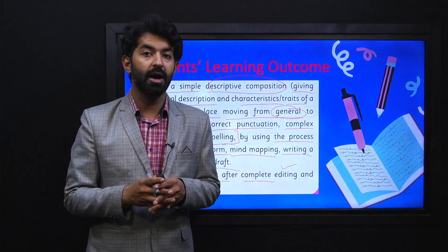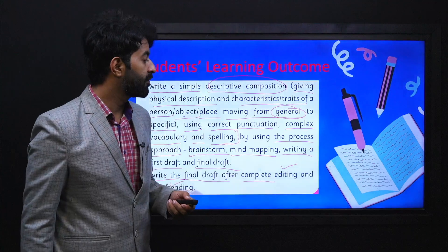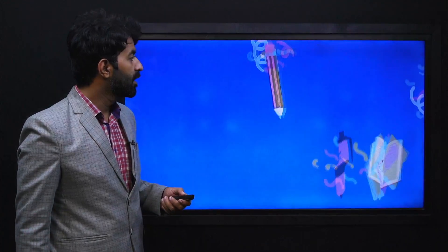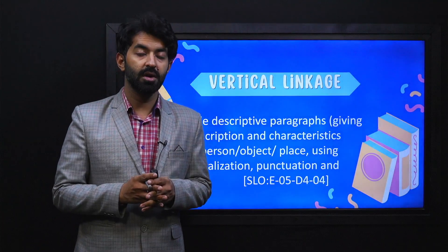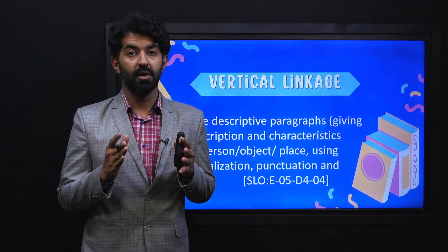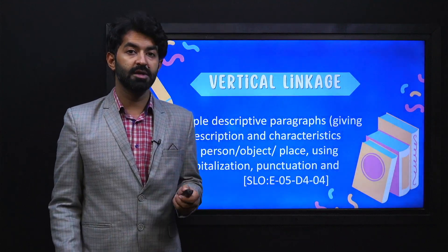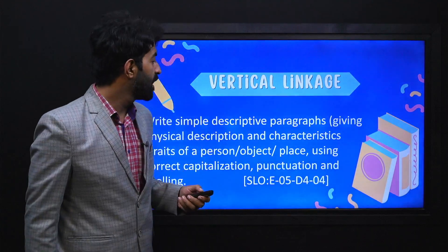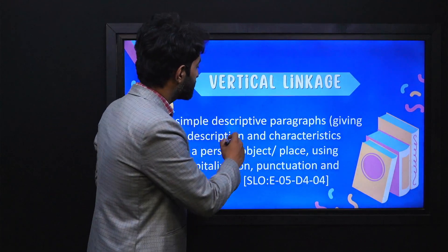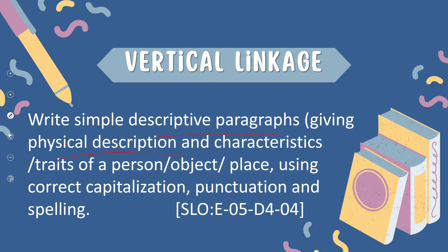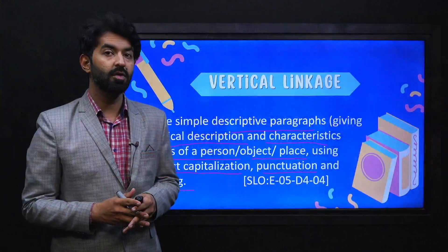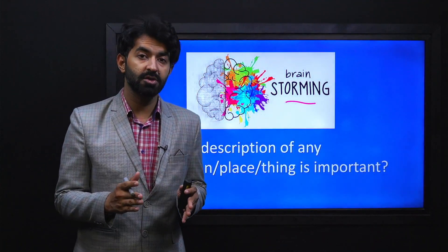We will also talk about how to write the first and the final draft using the process approach. Our focus is on composing descriptive writing or descriptive text. This SLO has a vertical linkage with your previous grade, where you wrote descriptive paragraphs giving physical descriptions and traits of a person, object, or place using correct capitalization, punctuation, and spelling.